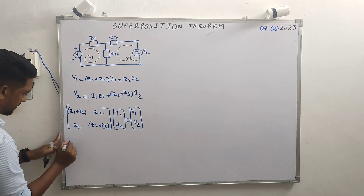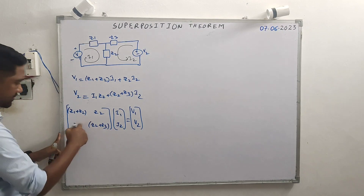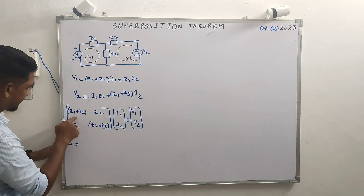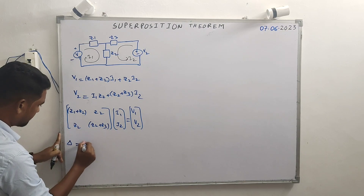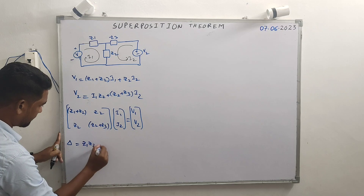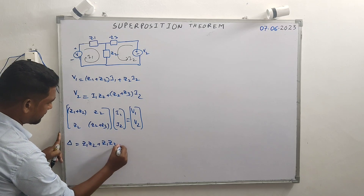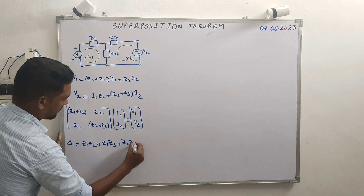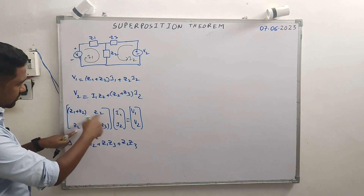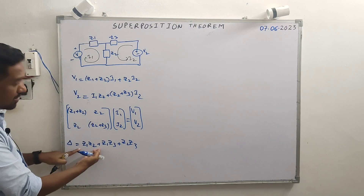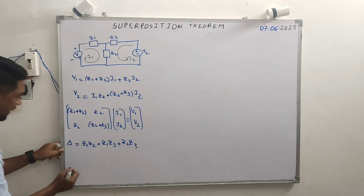The determinant delta equals Z1·Z2 plus Z1·Z3 plus Z2·Z3, obtained by cross-multiplication where the Z2 squared terms cancel out. That is the final delta value.